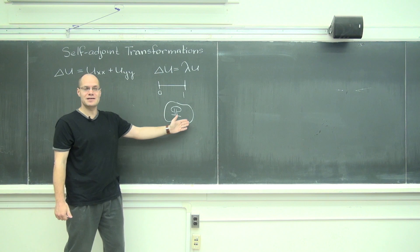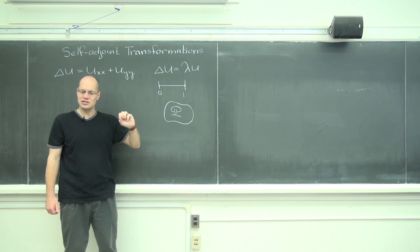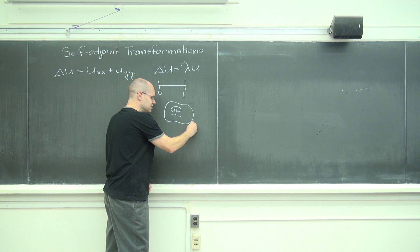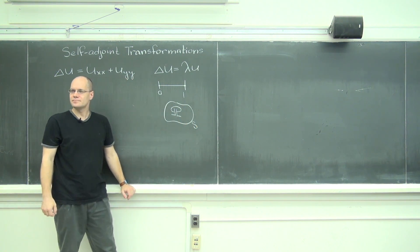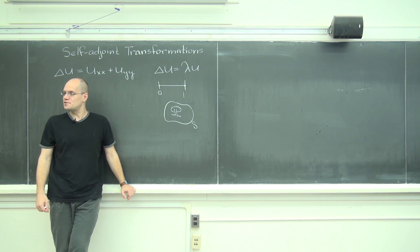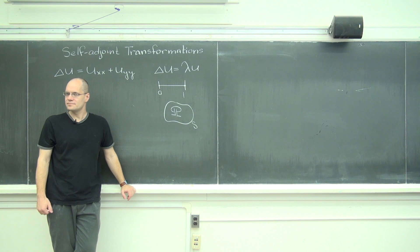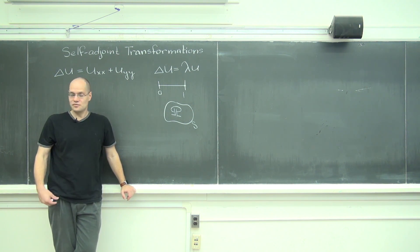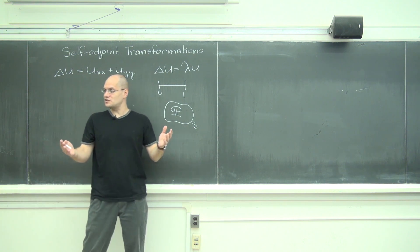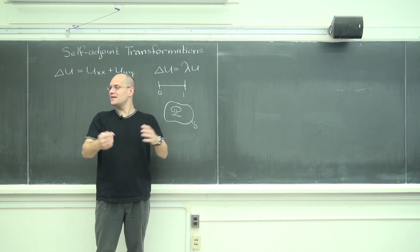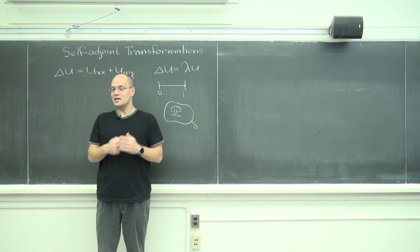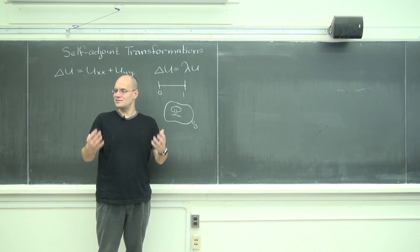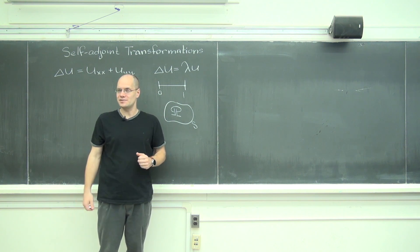The same thing in two dimensions: if I restrict my attention only to functions that equals zero on the boundary, usually denoted by s, do they form a linear subspace? And the answer is yes, they do. If I take two functions like that, add them together, another function like that. Take one of them, multiply by a number, another function like that. Closure under linear combinations, thus a subspace.